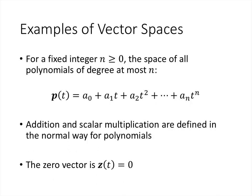Another example of a vector space is when we have a fixed integer n, the space of all polynomials of degree at most n. So for example, if we had n equaling 3, then this would be the set of all polynomials that have the form a0 plus a1t plus a2t squared plus a3t cubed, where a0, a1, a2, and a3 are just real coefficients of that polynomial.